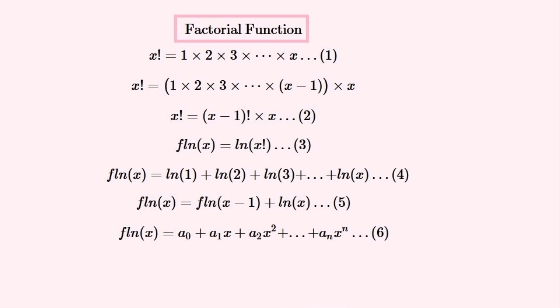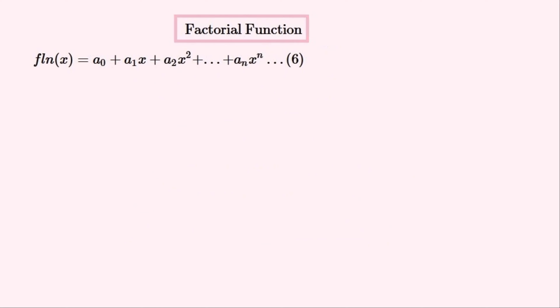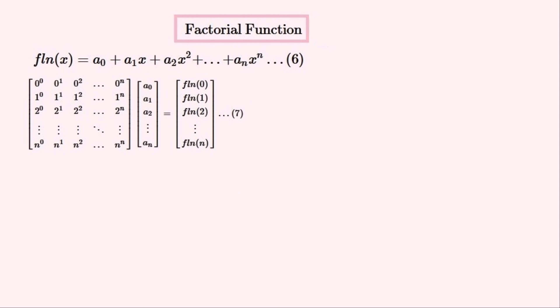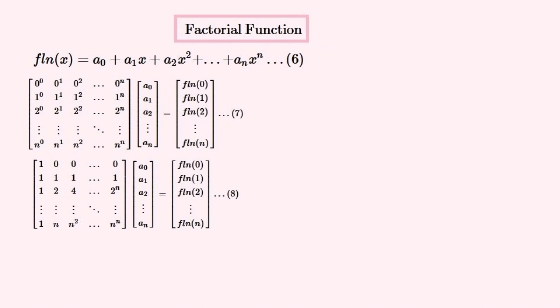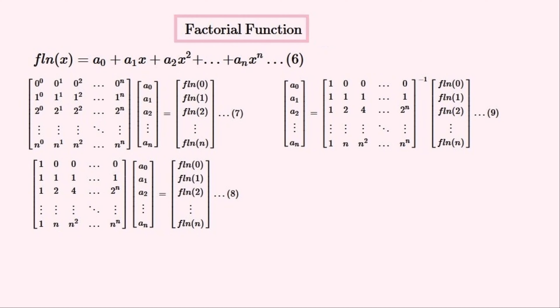So if we want to find a polynomial that is equal to this function, we'll define it here. It will only be approximately equal to it, but the approximation could be very good. In order to find the values of the coefficients of this polynomial, we'll need n sample points, then we'll create a matrix equation that will give us the values of these coefficients from these samples. This process is known as interpolation and is usually done for polynomials. We can calculate all of the elements of this matrix, make the coefficients vector into the subject of this equation, and then all we need is a value for n.